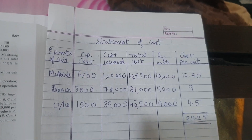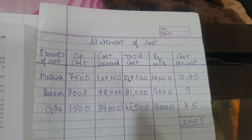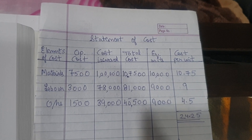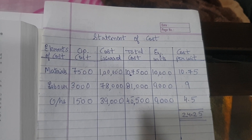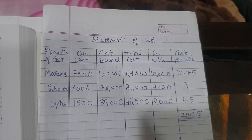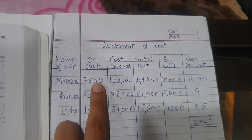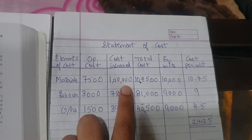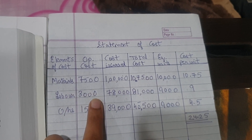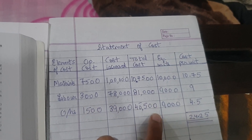Next, we prepare the statement of cost. As I taught in the last sum, in the statement of cost we consider opening cost as well as cost incurred - because it is average cost, both costs will be considered. So I wrote the opening WIP material cost, then the current cost incurred, and made the total. Similarly for labor: opening cost, current cost, and total. And for overheads: opening cost, current cost, and total.